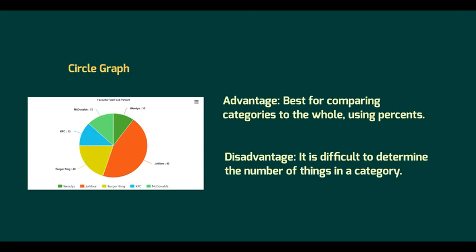The disadvantage of a circle graph is it's hard to determine the number of things in a category. So if I want to know exactly how many people voted for Jollibee, that would be a lot tougher.